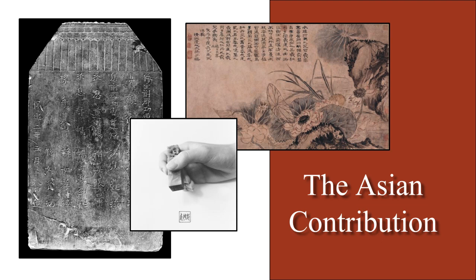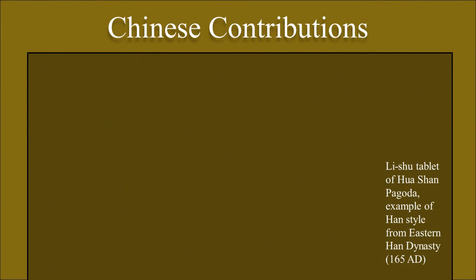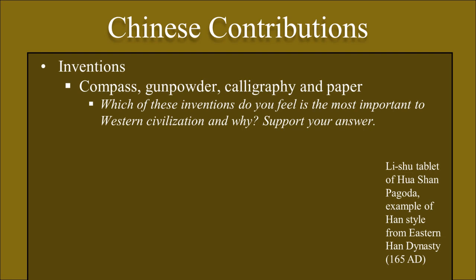Among the many innovations of the ancient Chinese were the compass, gunpowder, calligraphy, and paper. Which of these inventions do you feel is the most important to Western civilization? And I want you to be able to support your answer.